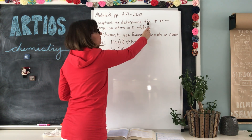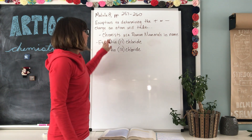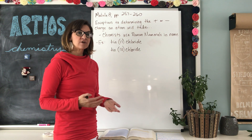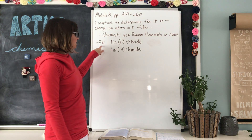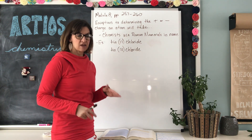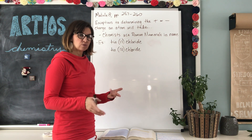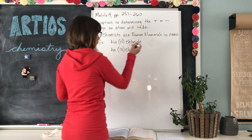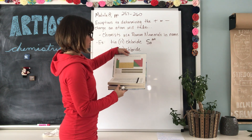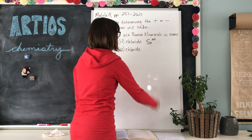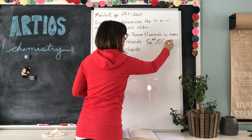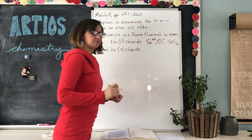The exceptions to determining the positive or negative charge an atom will take: chemists will use Roman numerals in the name. For example, tin will have a Roman numeral in parentheses — it's called tin 2 chloride. Whenever there's an exception and you need to figure out the formula, you will be given a Roman numeral which tells you the charge. This means tin is going to have a 2+ charge. Chloride has a 1- charge, so chloride is Cl⁻. We crisscross the numbers, so the formula would be SnCl₂.